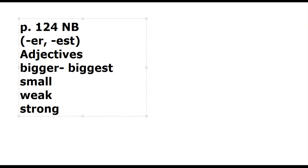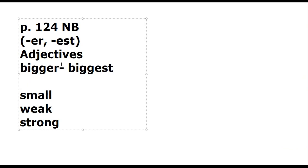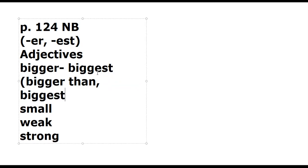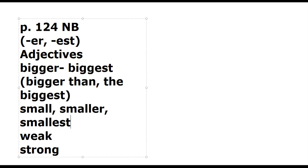For example: biggest. We say 'bigger than' — we have to use 'than' for comparatives. And we use the article 'the' for superlatives, like 'the biggest.'